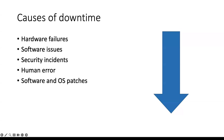Software updates and operating system patches are very important for security. But if they're delivered manually, or if users are responsible for their own updates during working hours, they can spend a lot of time over the course of a year just watching updates deliver, which is going to be really frustrating. And then you've got environmental factors — sometimes a natural disaster occurs, and you can't really do much about that other than strong disaster planning.